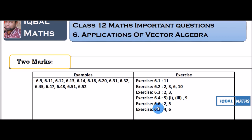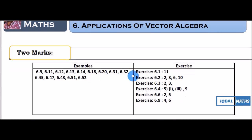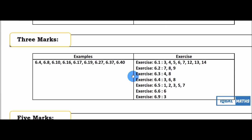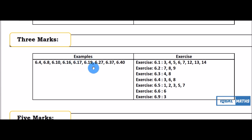6.9: 4, 6 — 2 marks. 3 marks: 6.4, 6.8, 6.10, 6.16, 6.17, 6.19, 6.27, 6.37, 6.40. 3 marks.